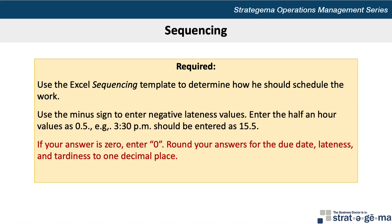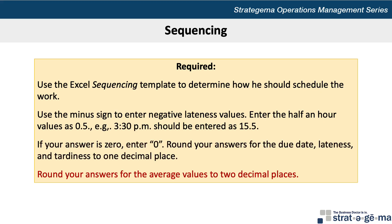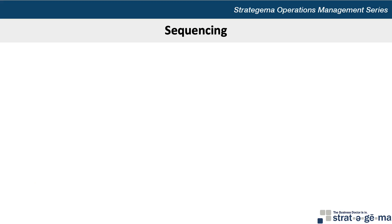If your answer is 0, enter 0, and round your answers for the due date, lateness, and tardiness to one decimal place. Round your answers for the average values to two decimal places. But before using Excel, let's solve this problem manually first.